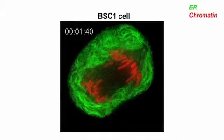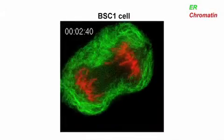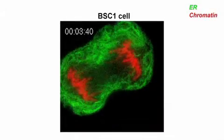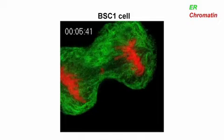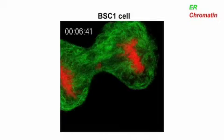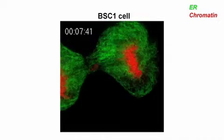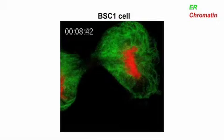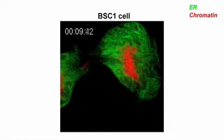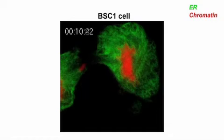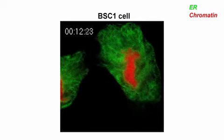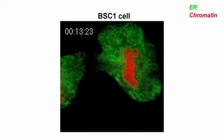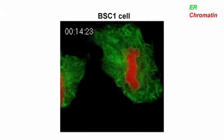Because the dynamics of spindle disassembly vary in different cell types, nuclear envelope formation may differ in cell lines other than HeLa. In BSC1 cells, for example, ER cisternae initiate envelope assembly all over the anaphase chromosome masses.